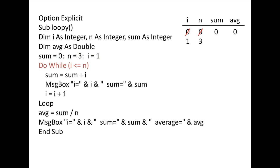Now we come to the DO WHILE loop. Is i less than or equal to n? Is 1 less than or equal to 3? This expression is TRUE, so we enter the loop. Sum is assigned the current value of sum plus i, which is 0 plus 1. A message box displays the current values of i and sum, which are 1 and 1. i is assigned the current value of i plus 1, which is 1 plus 1 or 2.